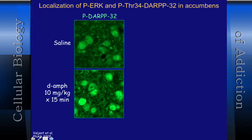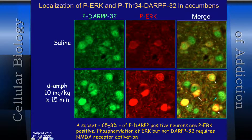If you look at ERK activation in exactly the same sections, only a subset of phospho-DARPP-positive cells were positive for ERK. The numbers were about half of these cells positive for DARPP, of which about 65% were also positive for ERK. Interestingly, phosphorylation of ERK — but not DARPP — required NMDA receptor activation, shown by infusing antagonists of these receptors into animals prior to drug administration.